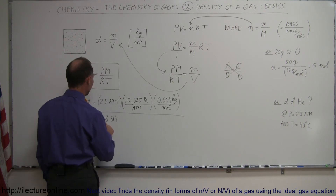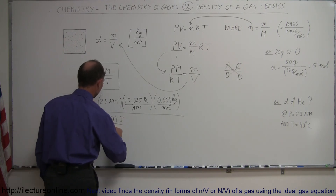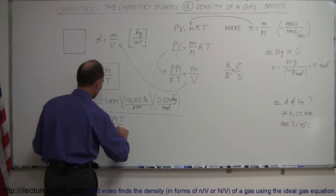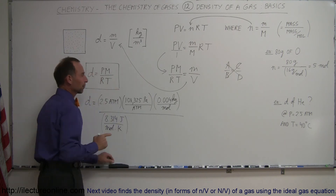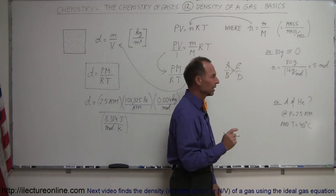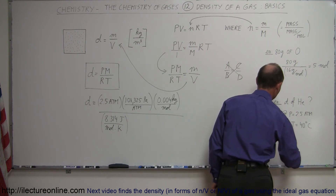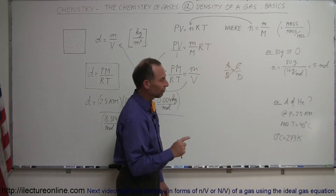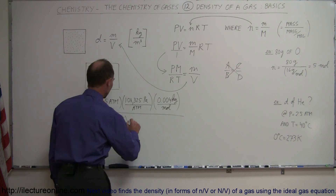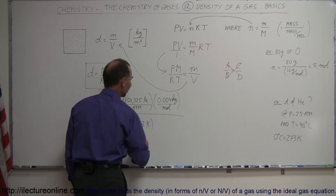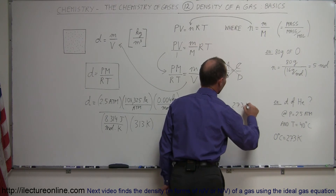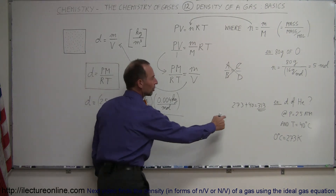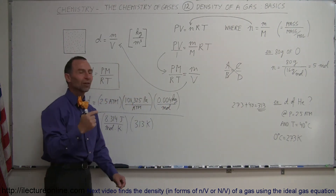The gas constant R is 8.314 joules per mole per Kelvin. For temperature, we were given 40 degrees centigrade. We know 0°C equals 273 K, so 40°C is 40 degrees more than that: 40 + 273 = 313 Kelvin. That is the temperature in Kelvin when the temperature in centigrade is 40 — you simply add 273.